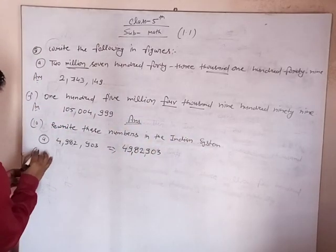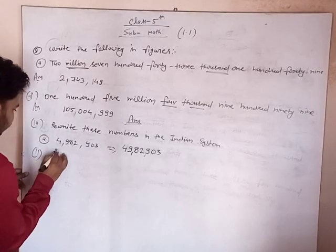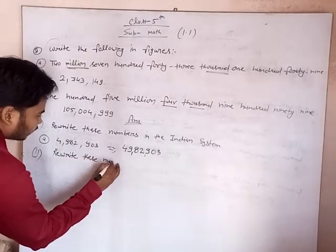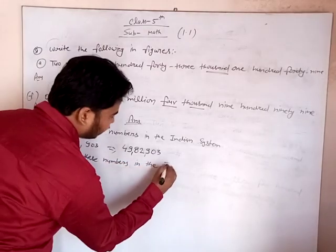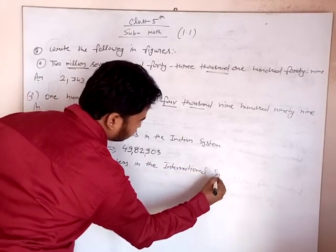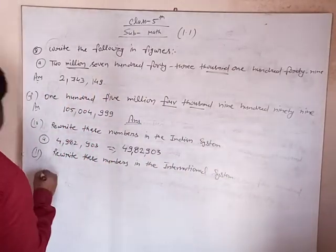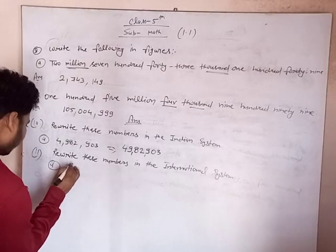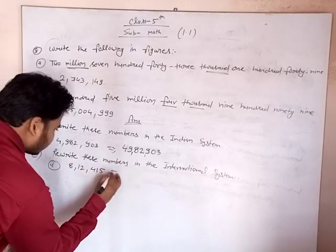Same here in question number 11: we write these numbers in the international system. Suppose we take question number 1 — the number 8,12,415.